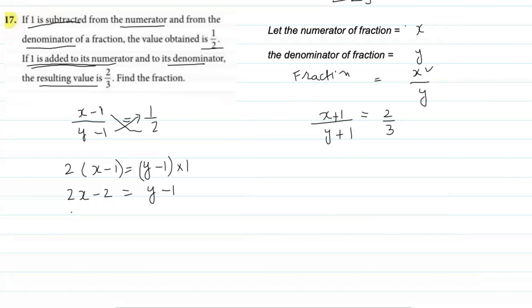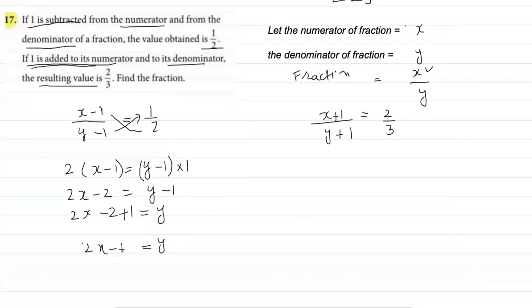Shifting y to the left side: 2x − y − 2 + 1 = 0, so 2x − y − 1 = 0, meaning y = 2x − 1. This is our equation one.